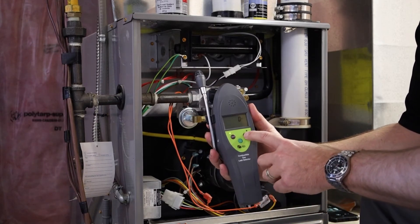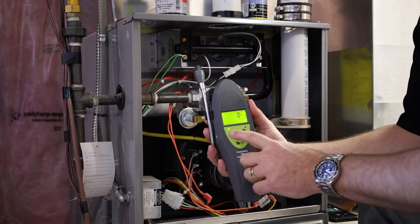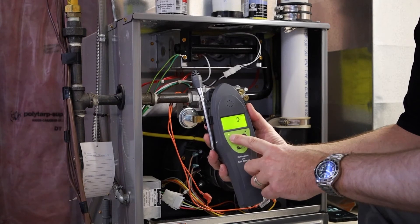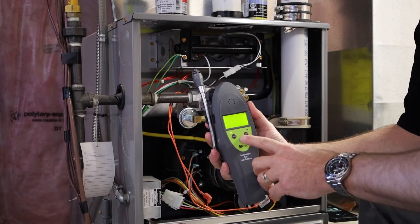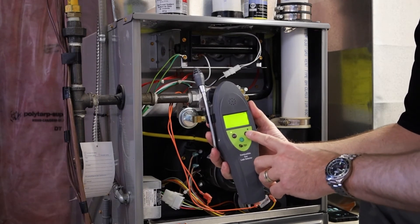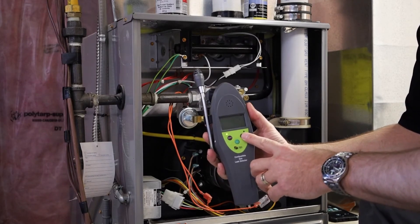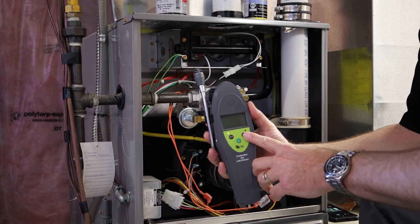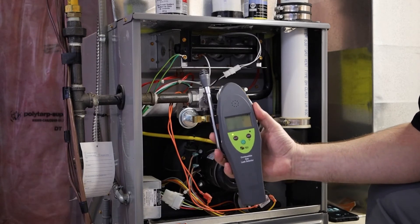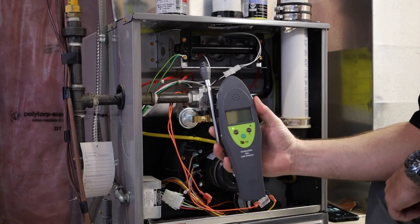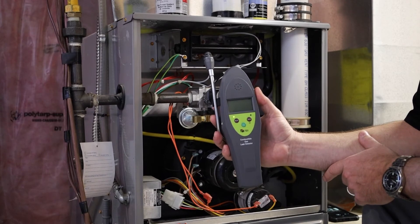Here we have a backlit display. Right now I have it reading in parts per million. But with the push of a couple buttons here, you can actually get it into LEL, so percent LEL, or stepped. These steps would be one, two, three, four, five, and they're going to represent different levels of leak. One would be 500, then up to 1,000, 3,000, 5,000, up to 10,000 parts per million.